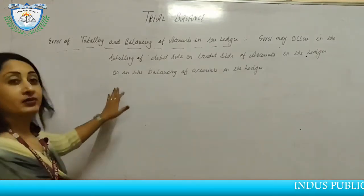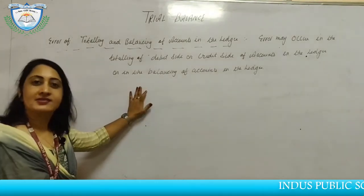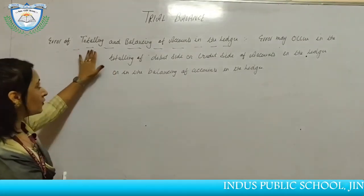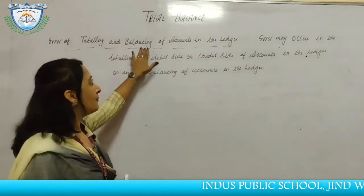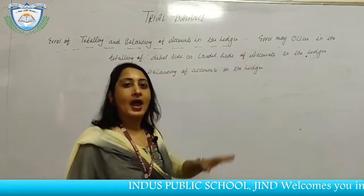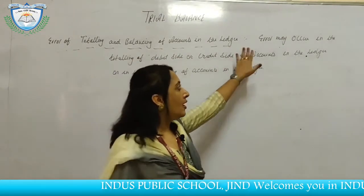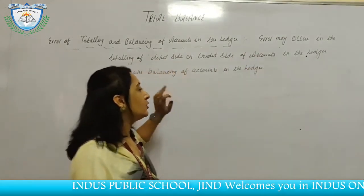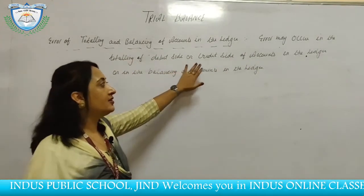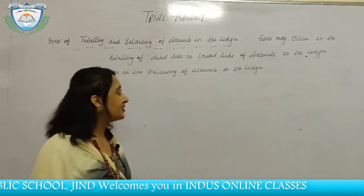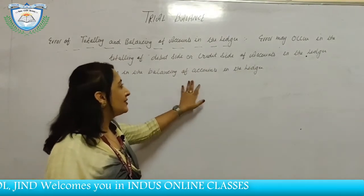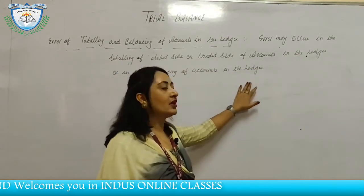One more error affects the trial balance: error of totaling and balancing of accounts in the ledger. An error may occur in the totaling of the debit or credit side of accounts in the ledger, or in the balancing of accounts in the ledger.